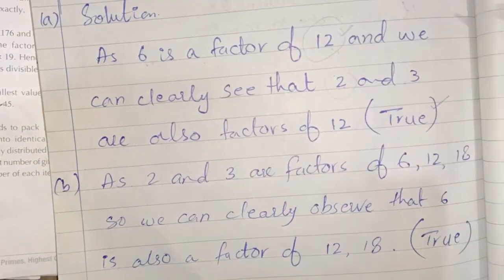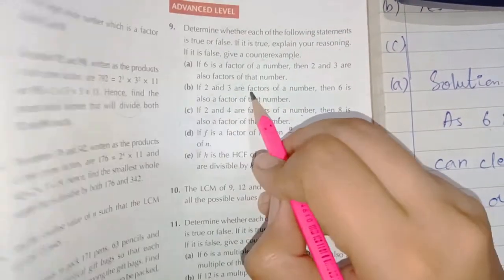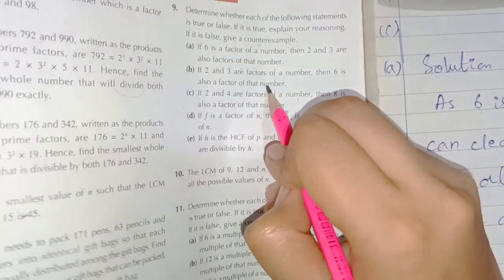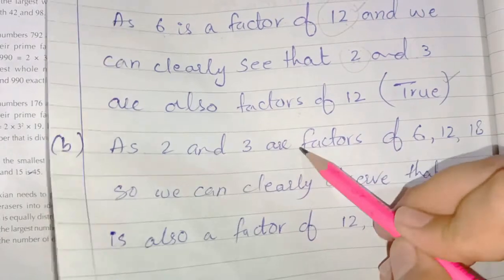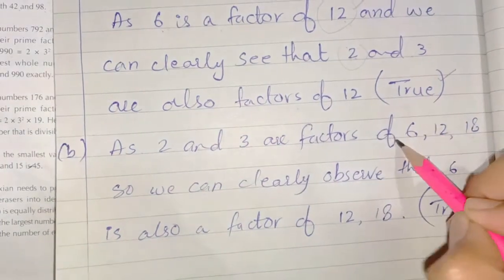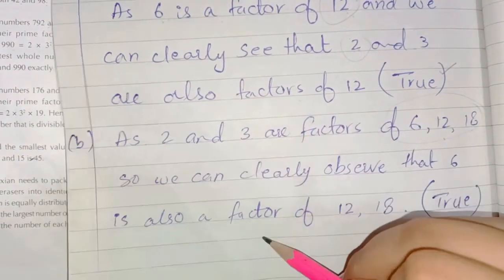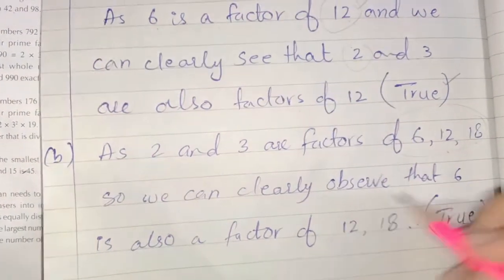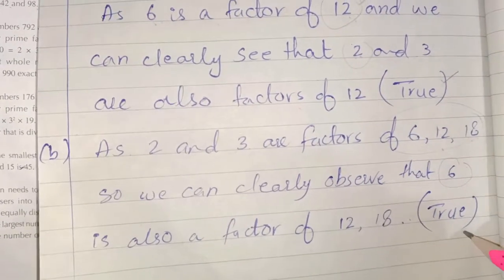Statement B: if 2 and 3 are factors of a number, then 6 is also a factor of that number. Since 2 and 3 are factors of 6, 12, and 18 — all those numbers are in the table of 2 and the table of 3 — we can observe that 6 is also a factor of 12 and 18. So this statement is true. Alternatively, the LCM of 2 and 3 is 6, and 6 is divisible by both 2 and 3.